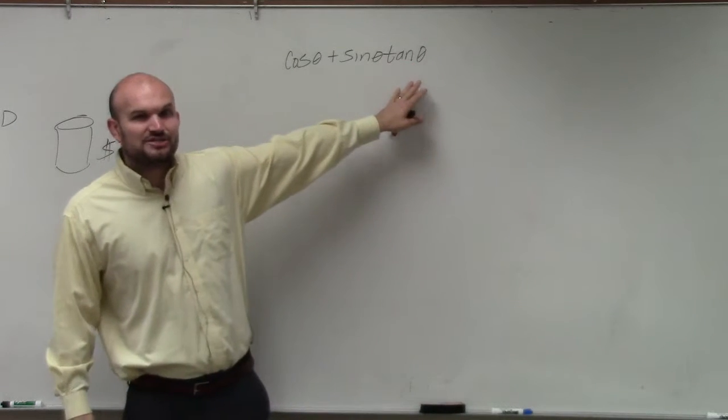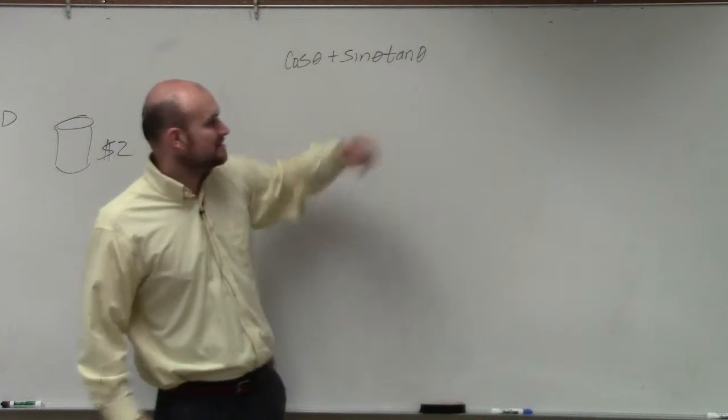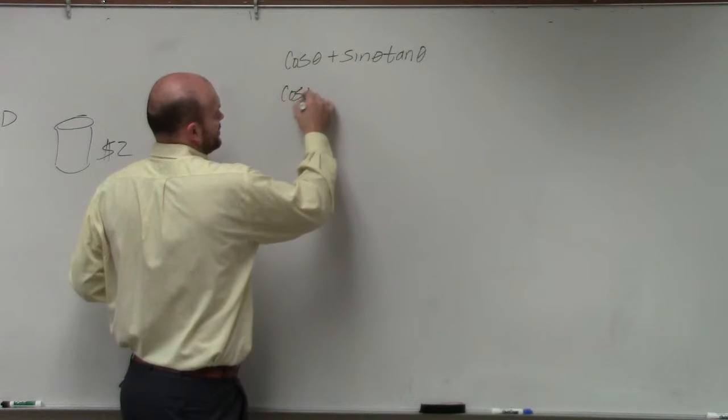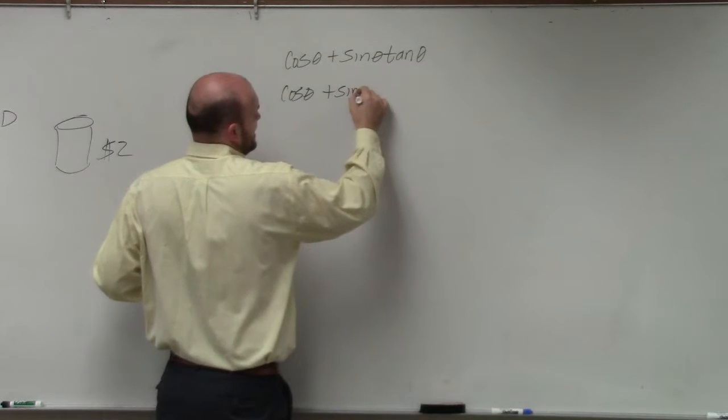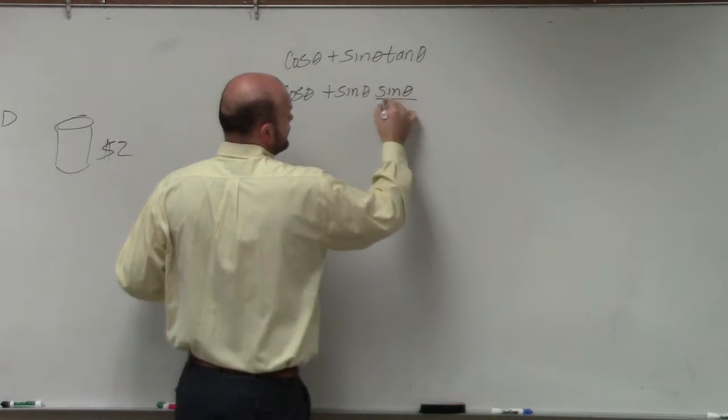But rather than rewriting tangent as 1 over cotangent, 1 over cotangent is not in terms of sines and cosines. I can rewrite this as cosine of theta plus sine of theta times sine of theta over cosine of theta.